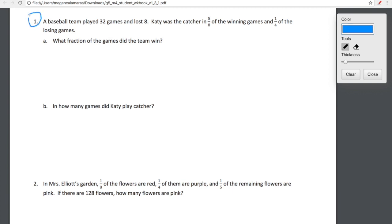Here we go, we are hopping right into number one in our problem set. Again, this is an L12. Let's read this before we just start blind calculating. A baseball team played 32 games and lost eight. Katie was the catcher in five-eighths of the winning games and one-fourth of the losing games. What fraction of the games did the team win? Okay, so this calculation is not going to be tricky but the tricky part is understanding the information that is given us. We just need to be thoughtful about it.